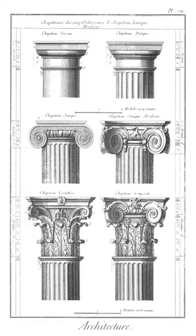Baluster: a small moulded shaft, square or circular, in stone or wood, sometimes metal, supporting the coping of a parapet or the handrail of a staircase; a series of balusters supporting a handrail or coping.